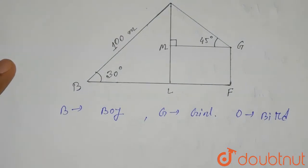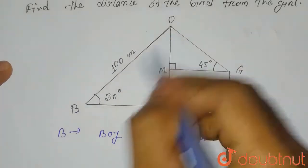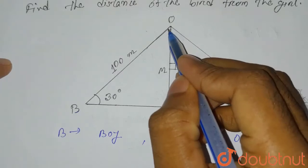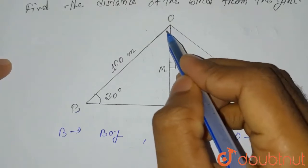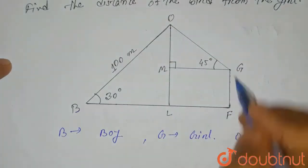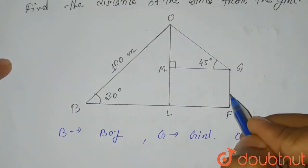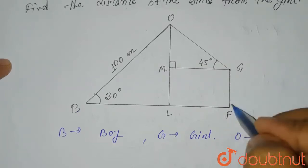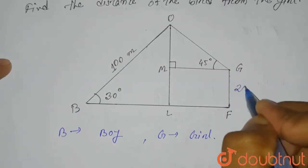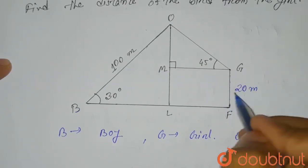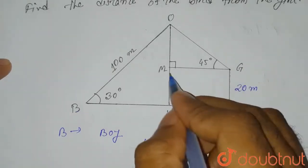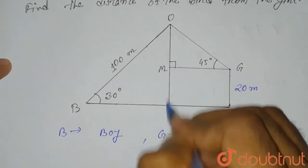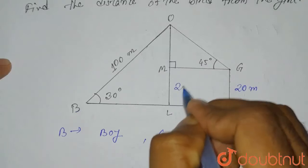We can see that OB is 100 meters. It is given in the question that the distance of the bird from the boy is 100 meters, and the girl is on a 20-meter high building, so the length of GF will be 20 meters. Similarly, since GF is 20, ML will be equal to GF according to the diagram, so ML will also be 20 meters.